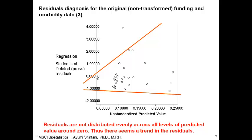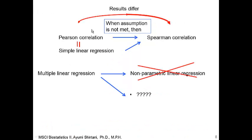In the residuals vs. fitted plot, you expect random scatter symmetric around the line of zero, with 95% of observations falling between minus 2 and plus 2. Instead, you see patterns: variance is smaller at lower values of the X-axis and larger at higher values, indicating variances are not equal. There is also an outlier — probably the AIDS observation. When Pearson's or simple linear regression results differ from Spearman's, it is likely that assumptions for linear regression are not met.